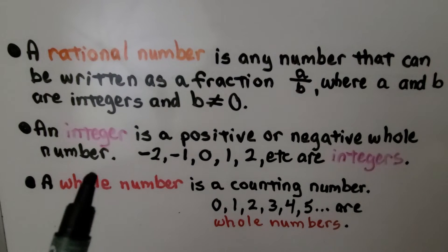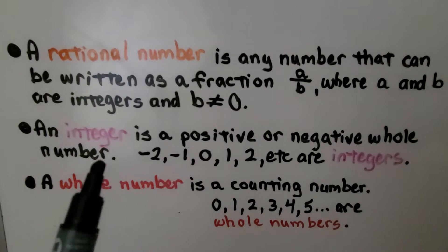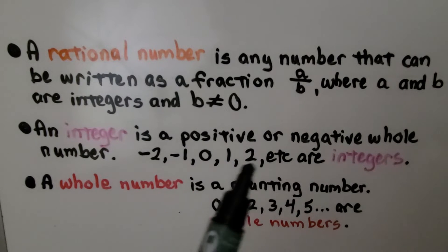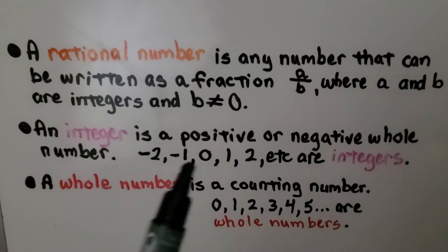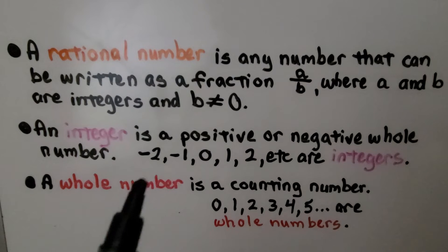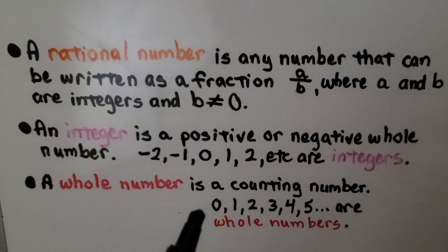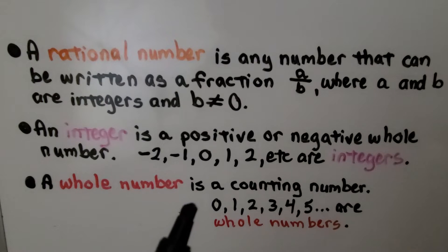Remember, an integer is a positive or negative whole number — there are no fractions or decimals. And a whole number is a counting number: 0, 1, 2, 3, 4, 5 — those are counting numbers, those are whole numbers.